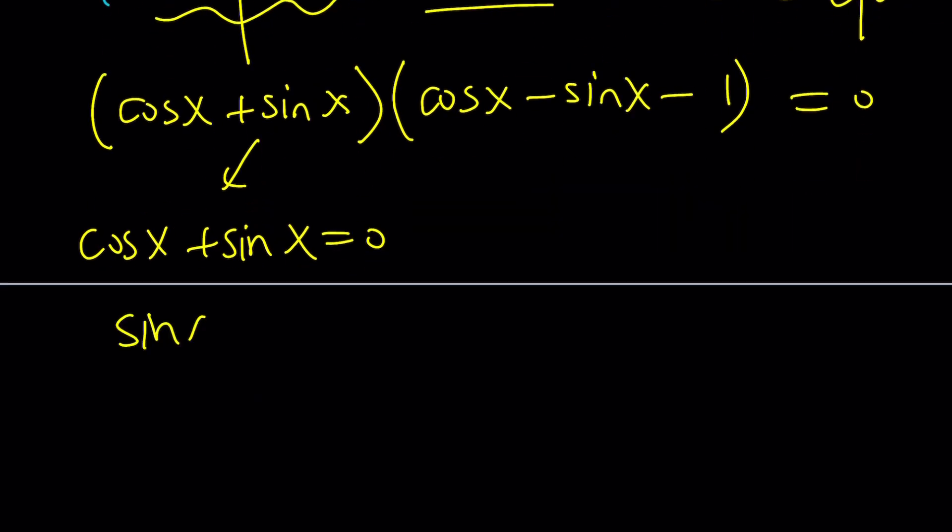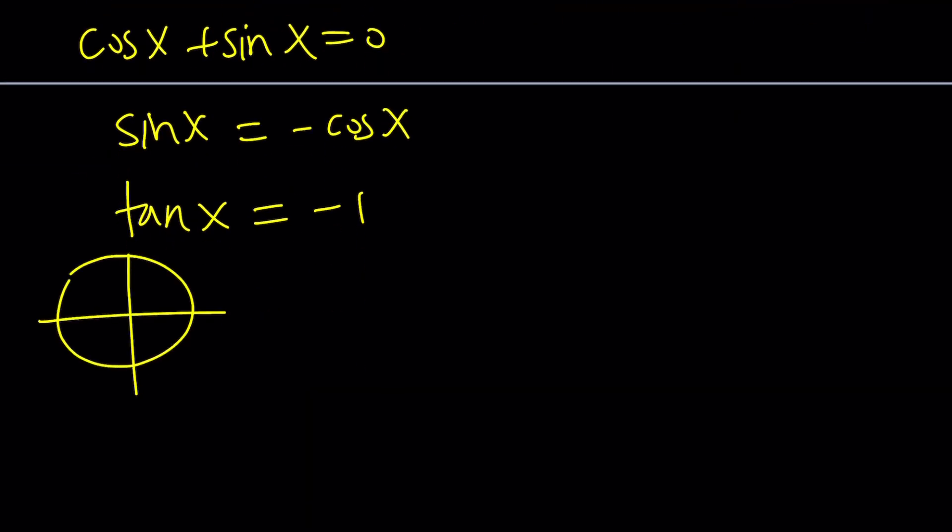We can basically write this as sine x is equal to negative cosine x. Given that cosine x won't be 0, and if cosine is 0, sine will be 1 or negative 1, obviously, it's not going to satisfy. So we can easily divide both sides by cosine. That gives us tangent x equals negative 1. And as you should know, again, the unit circle comes up. Tangent can be 1 here and here. That's where tangent is 1, and this is where tangent is negative 1. Make sense?